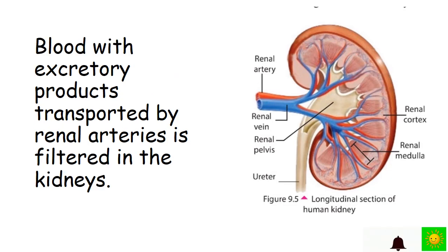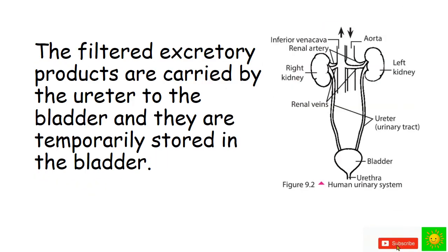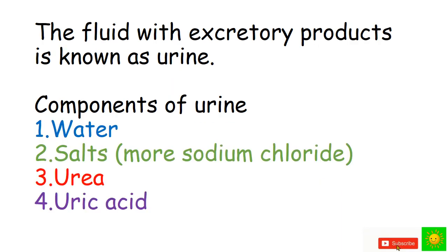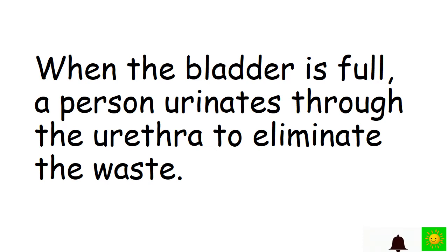Blood with excretory products transported by the renal arteries is filtered in the kidneys. The filtered excretory products are carried by the ureter to the bladder, where they are temporarily stored. This fluid with excretory products is known as urine. The components of urine include water, salts such as sodium chloride, urea, and uric acid. When the bladder is full, a person urinates through the urethra to eliminate the waste.